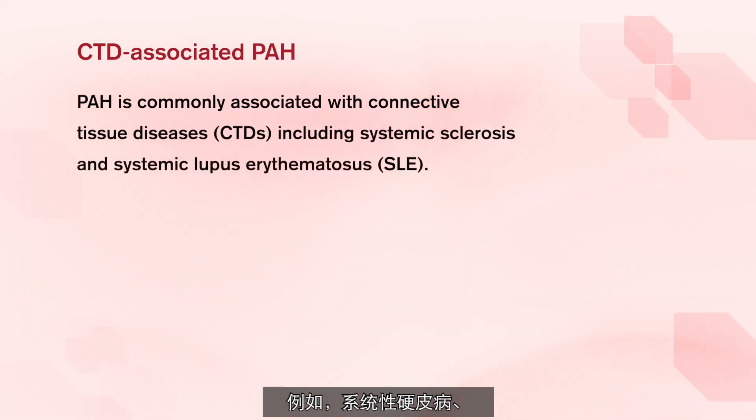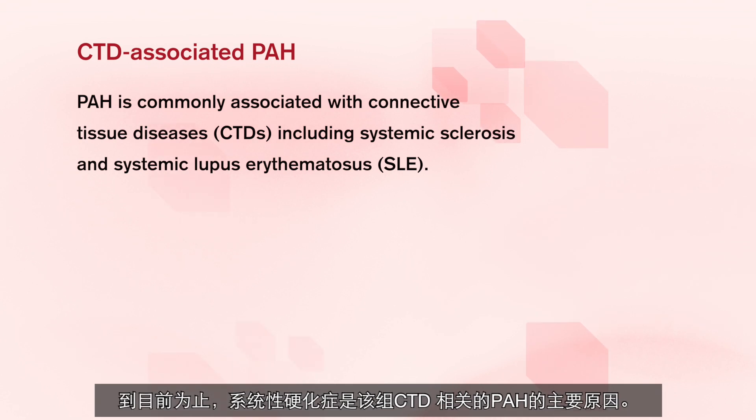CTD stands for Connective Tissue Disease associated with PAH, and it describes a group of autoimmune diseases that can cause PAH. These include, for example, systemic sclerosis, systemic lupus erythematosus, or mixed connective tissue disease. By far, systemic sclerosis is the main cause of CTD-associated PAH. It is important to screen for CTD-PAH because early on there may be no symptoms or only very mild symptoms.